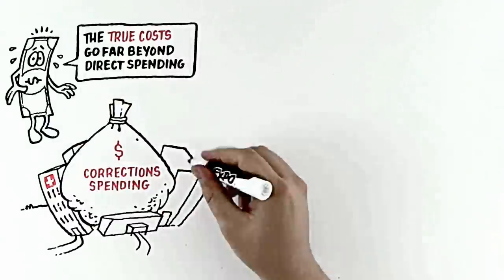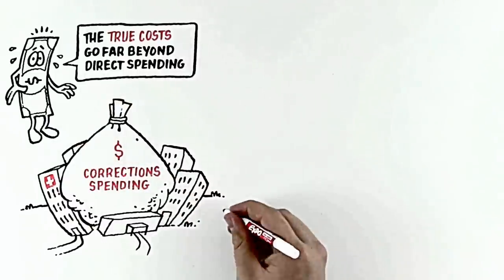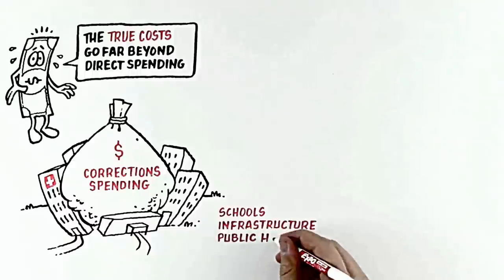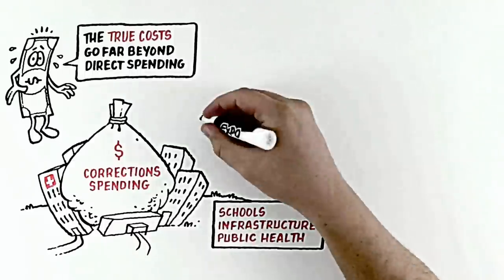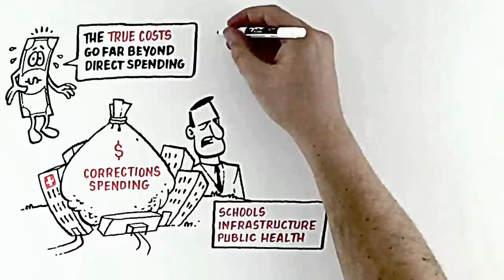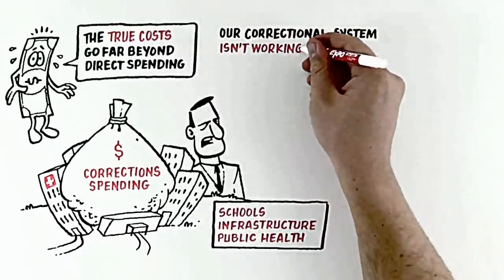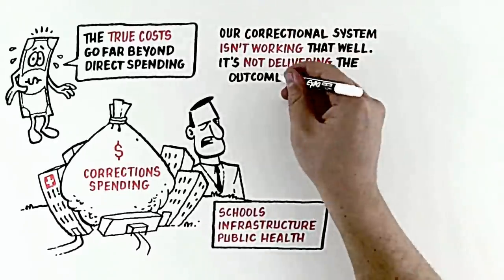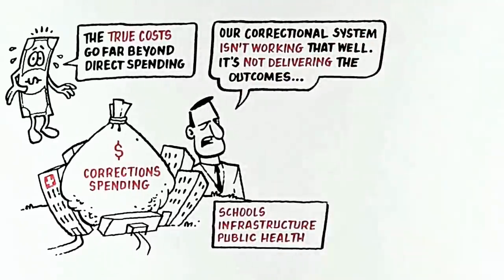And the fact is, every dollar we spend on a prison is a dollar that we can't spend on schools, or on infrastructure, or on public health. And the worst part is that our correctional system just isn't working that well, and it's not delivering the outcomes that Americans want.